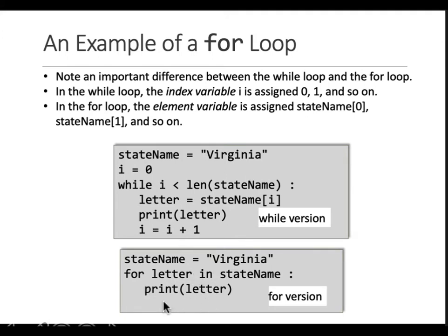In the for loop, the element variable is assigned stateName[0], [1], [2], [3], and so on. This variable is stateName[0] in the beginning, then it's [1], [2], [3], [4]. When it hits the end, it automatically knows the for loop needs to get out of this block.